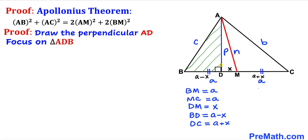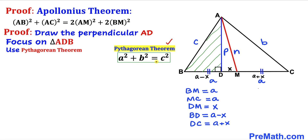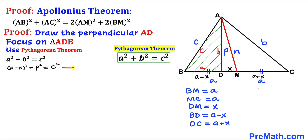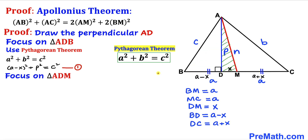Since triangle ADB is a right triangle, we apply the Pythagorean theorem: A² + B² = C². Here, the leg along the base is (a − x), the other leg is p, and the hypotenuse is c. So we get: (a − x)² + p² = c². Let's call this Equation 1.